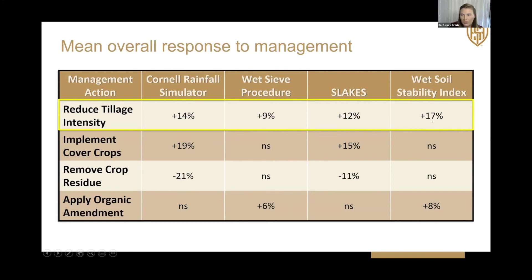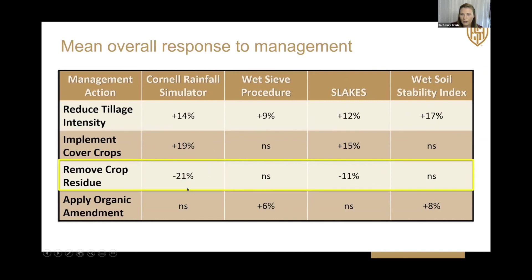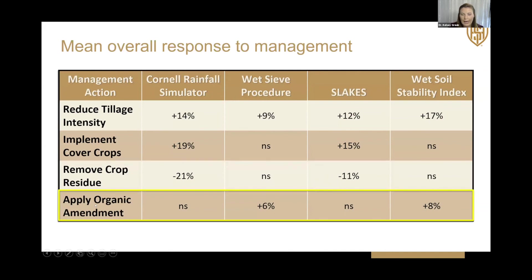Looking at other management changes: when implementing cover crops, only the Cornell method and the Slakes method were sensitive. For crop residue removal — either taking it off the field or burning it — again only Cornell and Slakes responded significantly, with a 21% decrease in aggregate stability for Cornell and an 11% decrease for Slakes. When applying an organic amendment such as manure or poultry litter, only the wet sieve procedure and the wet soil stability index showed a significant increase in aggregate stability.